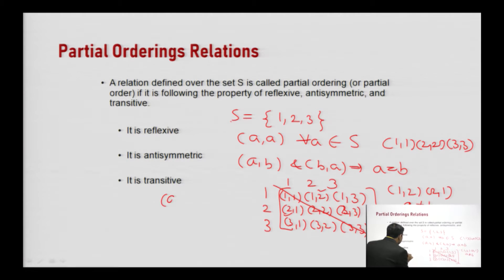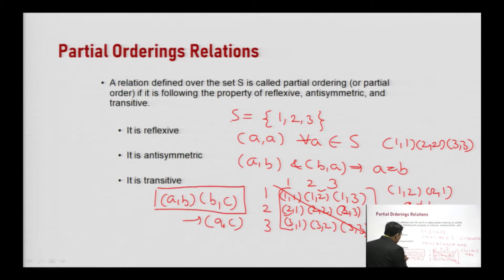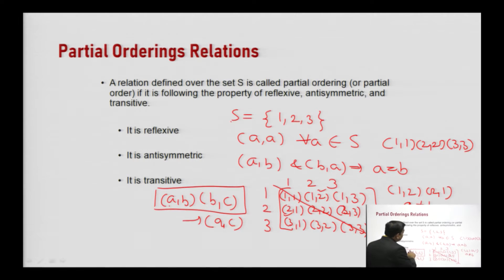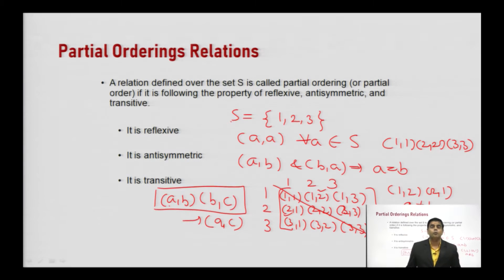The third property is transitivity. Transitivity states: if A has a relation to B, and B has a relation to C, then A must have a relation to C. For all ordered pairs of this type, the pair (A, C) must also exist — meaning if the 1st element relates to the 2nd and the 2nd relates to the 3rd, then the 1st and 3rd must also be related.